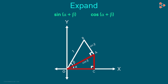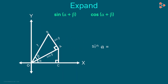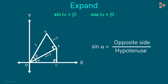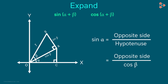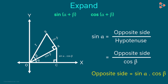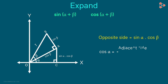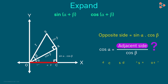Look at this triangle carefully. Its hypotenuse is cos beta. We want to know the measure of the opposite side and the adjacent side. We know that sine alpha is the opposite side over the hypotenuse, and the hypotenuse for this triangle is cos beta, so the opposite side is sin alpha cos beta. Similarly, cos alpha is the adjacent side over the hypotenuse, so the adjacent side is cos alpha cos beta.